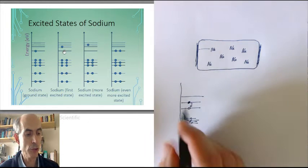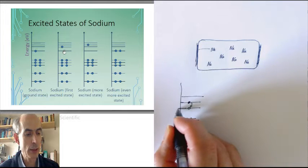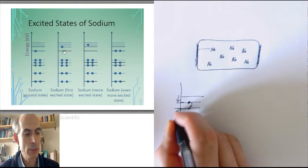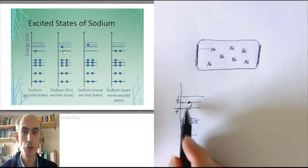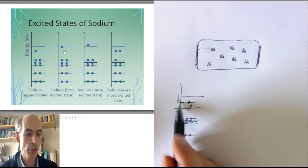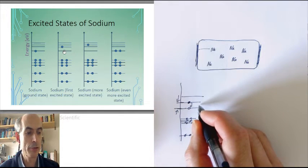That would result in an electron losing this amount of energy, the difference in the energy of the two shells. So that's the amount of energy that would have to leave in a photon.